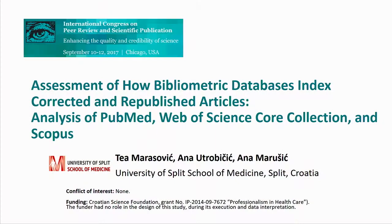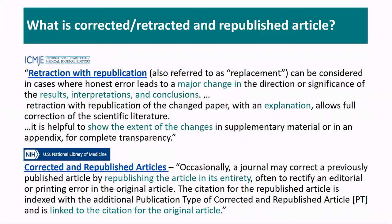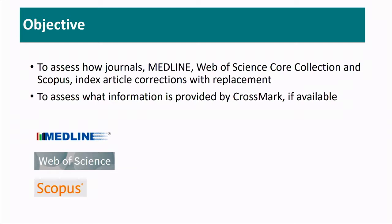If you look at the fact sheets of the National Library of Medicine, they already have a provision for dealing with such articles. They have what is called corrected and republished articles, and then they are indexed. So our aim was to see how journals and different indexing databases deal with these things — how, when you have a retracted publication and you're replacing it, what you see as an end user when you come to the journal or any of these indexing databases.